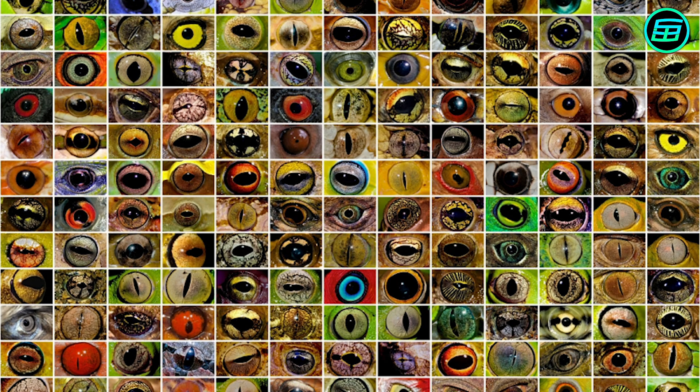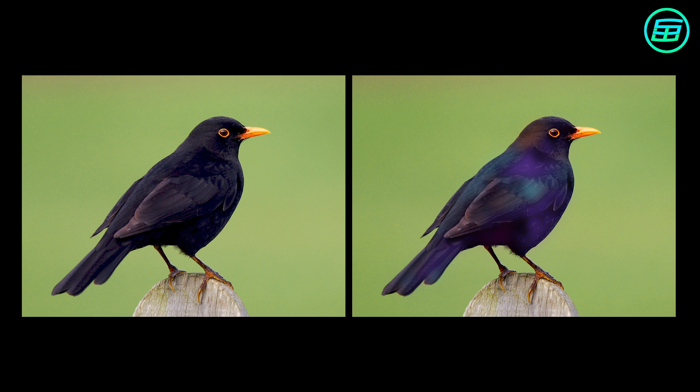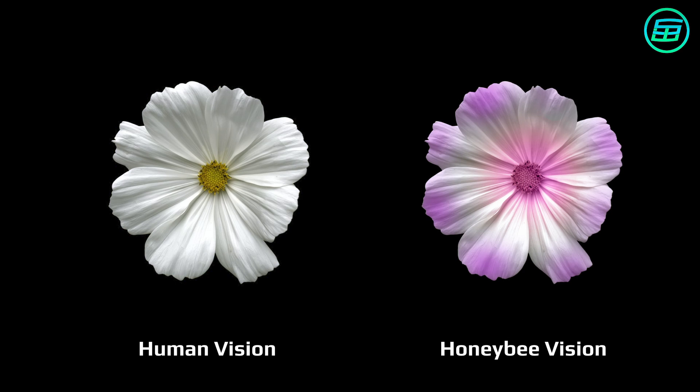When we examine the eyes of other living things, we find important differences. For instance, birds have five different cone cells, giving them the ability to perceive many more shades of color than we can. Honeybees can see in ultraviolet light, so a flower that to us appears plain white but which also reflects ultraviolet will look very different to a bee.